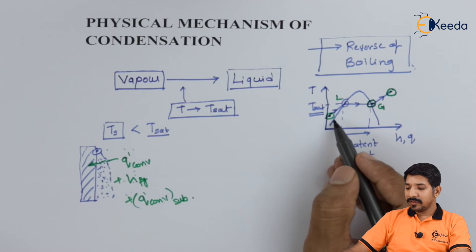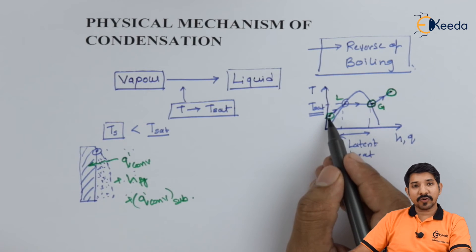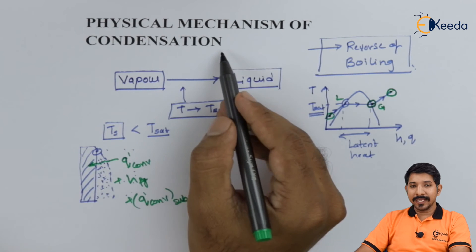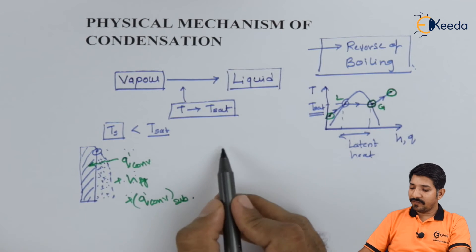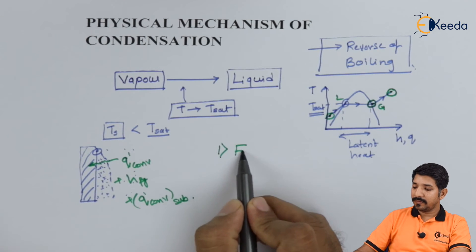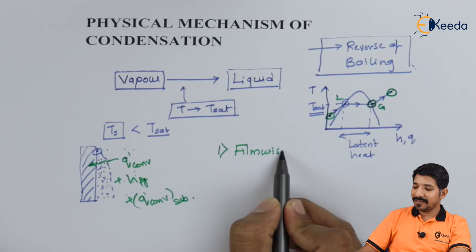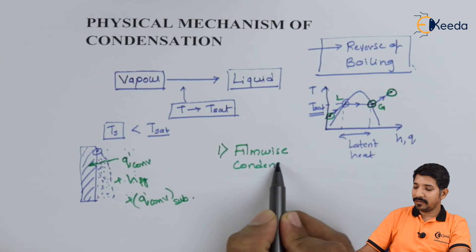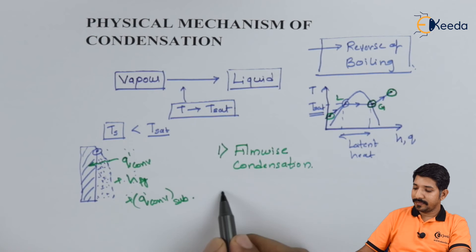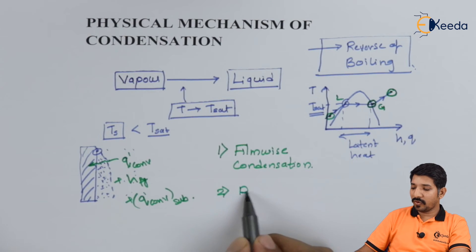Based on the collection of this droplet over the surface of a given wall, there can be two types of condensation: first is filmwise condensation and second is dropwise condensation.